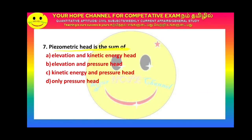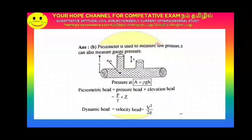Next question: The piezometric head is the sum of what? The answer is elevation head and pressure head. A piezometer is used to measure low pressure; pressure is measured as ρGH. The piezometric head formula is pressure head plus elevation head. The dynamic head, or velocity head, is V²/2G.